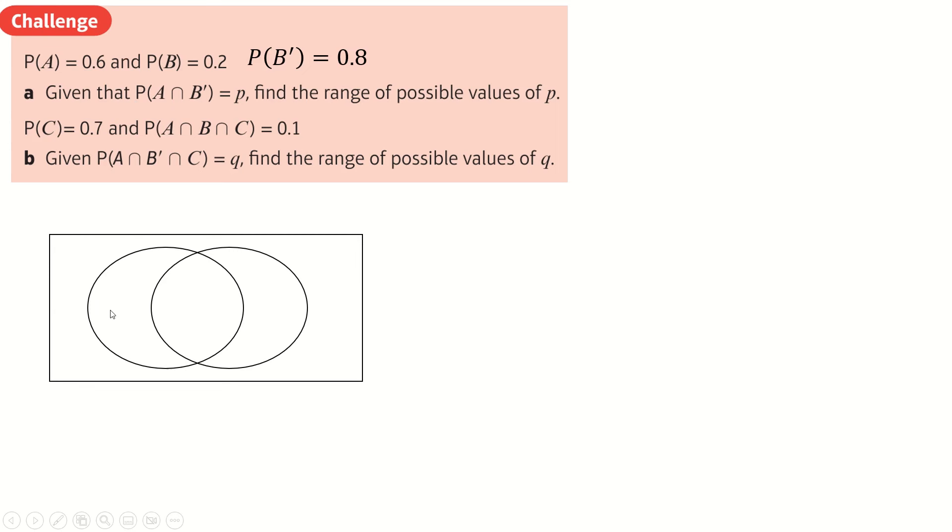Anyway, drawing a Venn diagram. So P of A, you know this circle's got to be 0.6. This one's got to be 0.2. What you can do is you can just put 0 in the middle and make 0.6 here and 0.2 there. Now, I put this in red because this here is A intersected with B dashed. Because that's the thing stuffed in A and not in B. Of course, that means 0.2 needs to go out here.